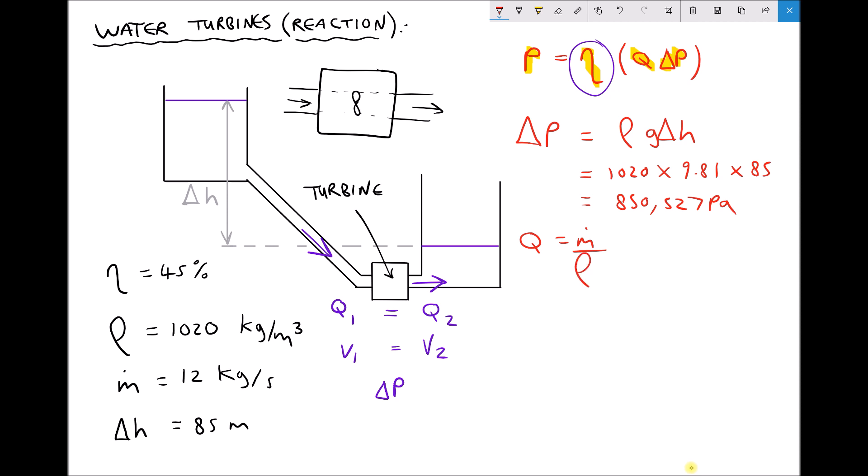So let's go ahead and calculate our power. We have the power equals the efficiency as a decimal, 0.45, times the volume flow rate. Well we have a mass flow rate of 12 and we have a density of 1020. And we're multiplying that by our pressure drop. Note that we're working in SI units so our answer is going to be in SI units. When we run that through the calculator we get a power output equal to 4502 watts.